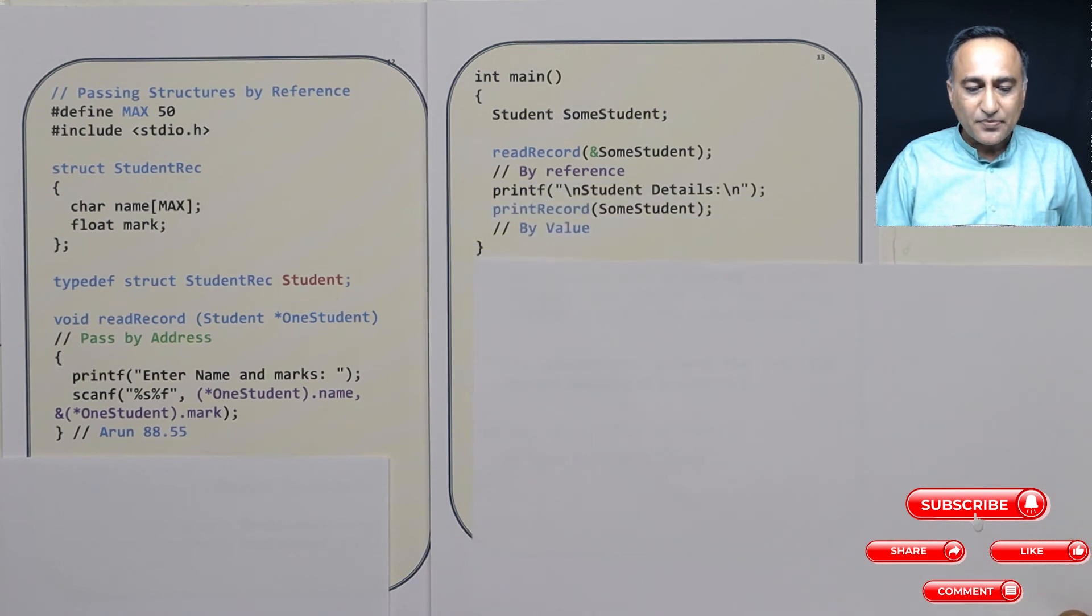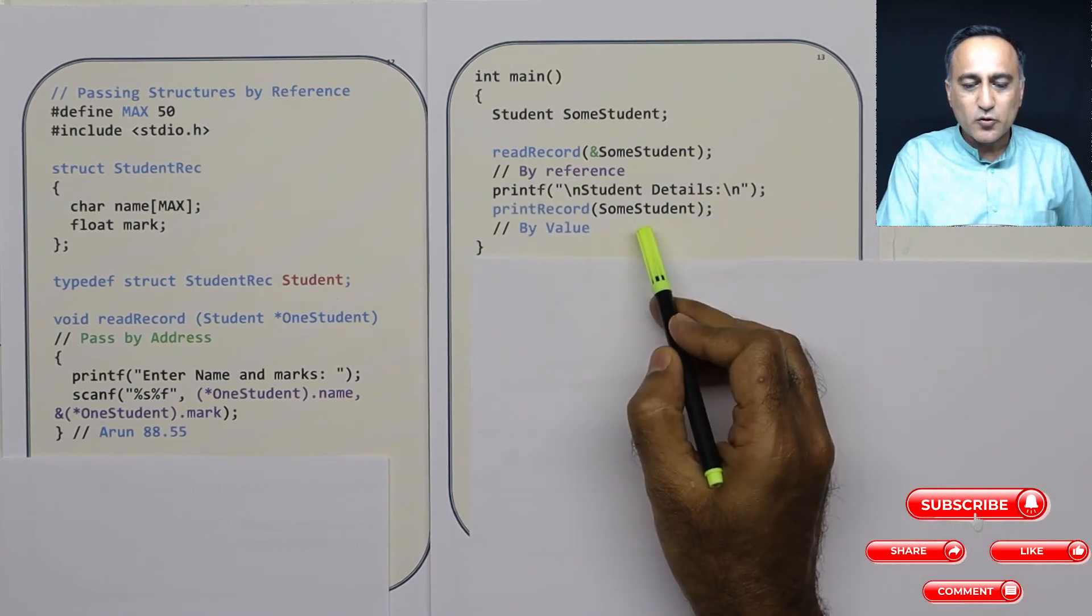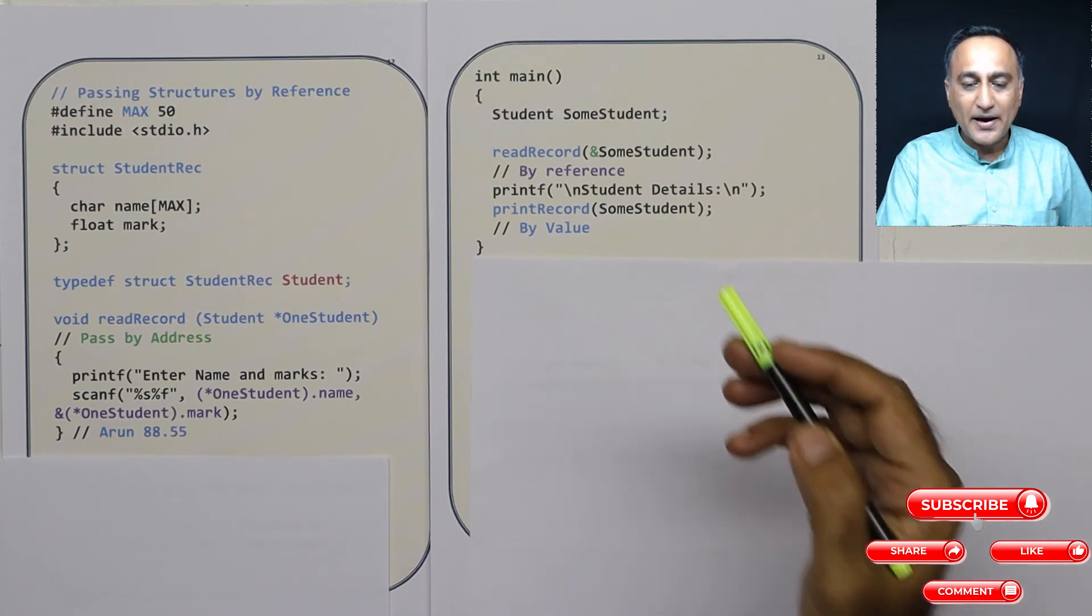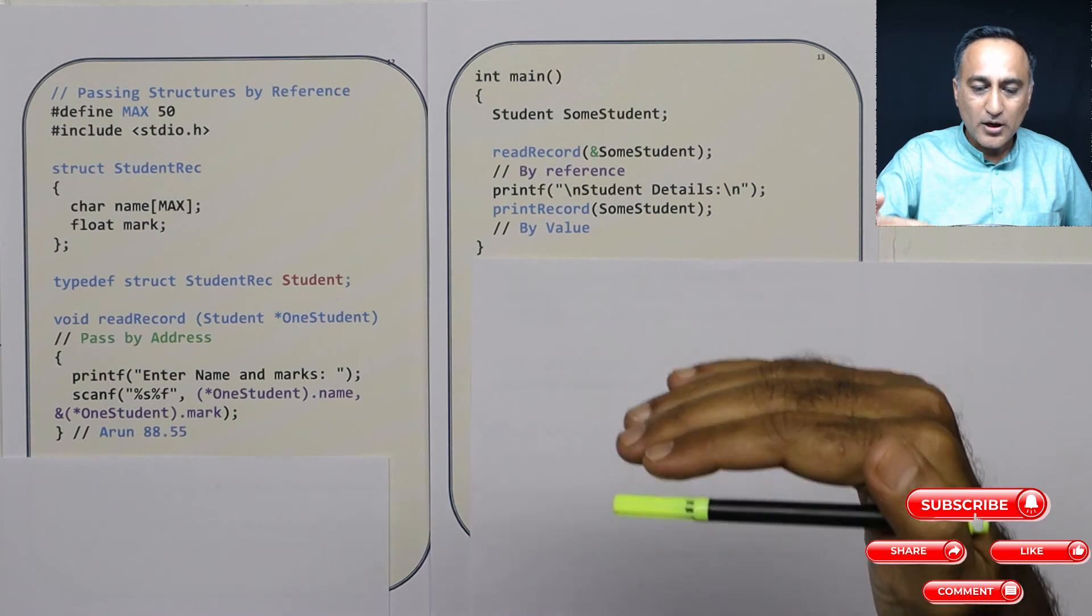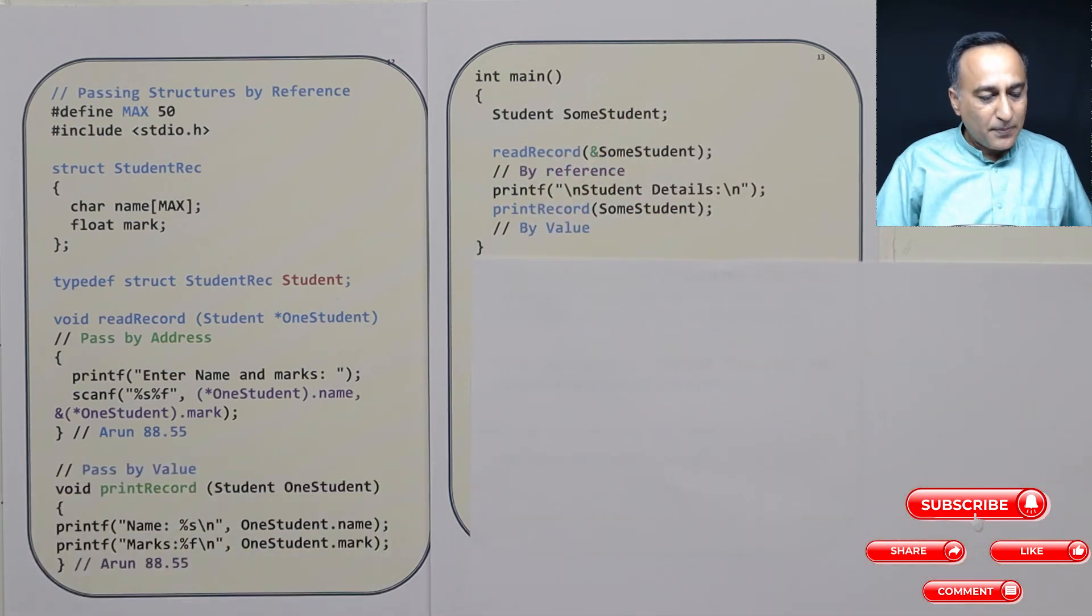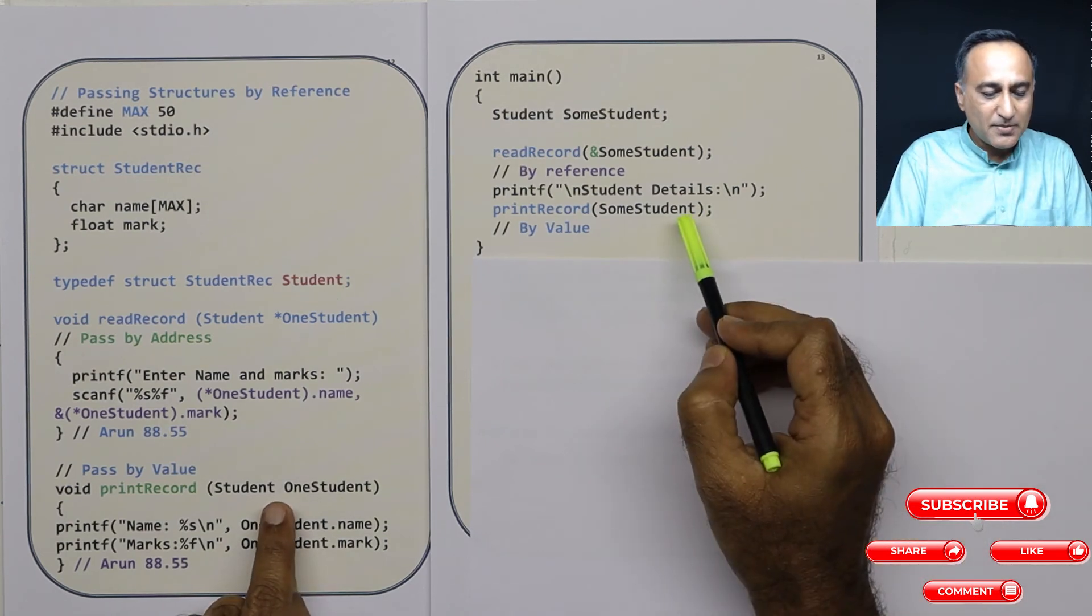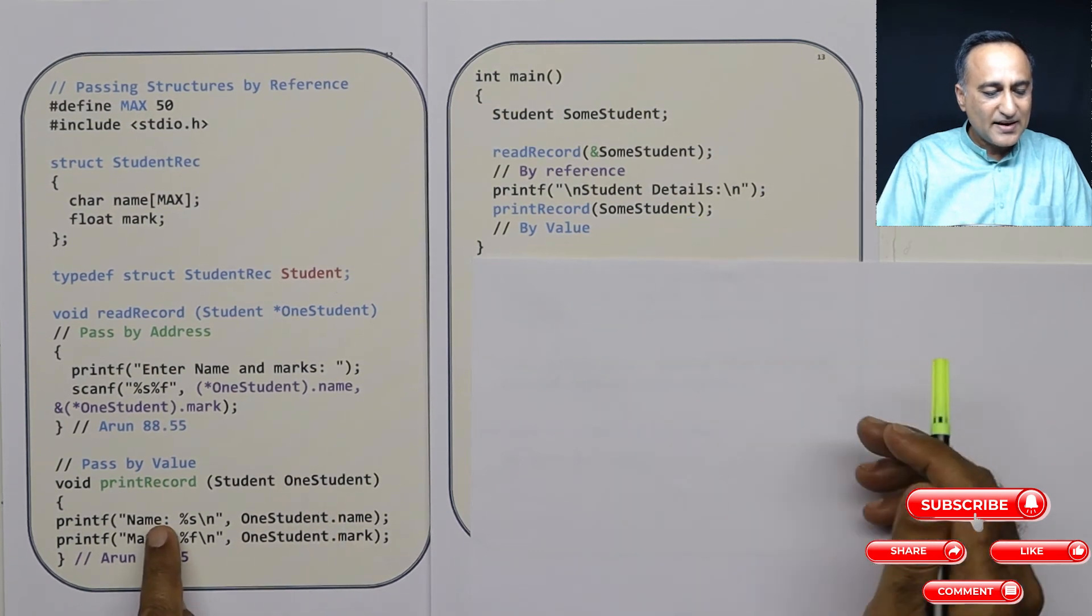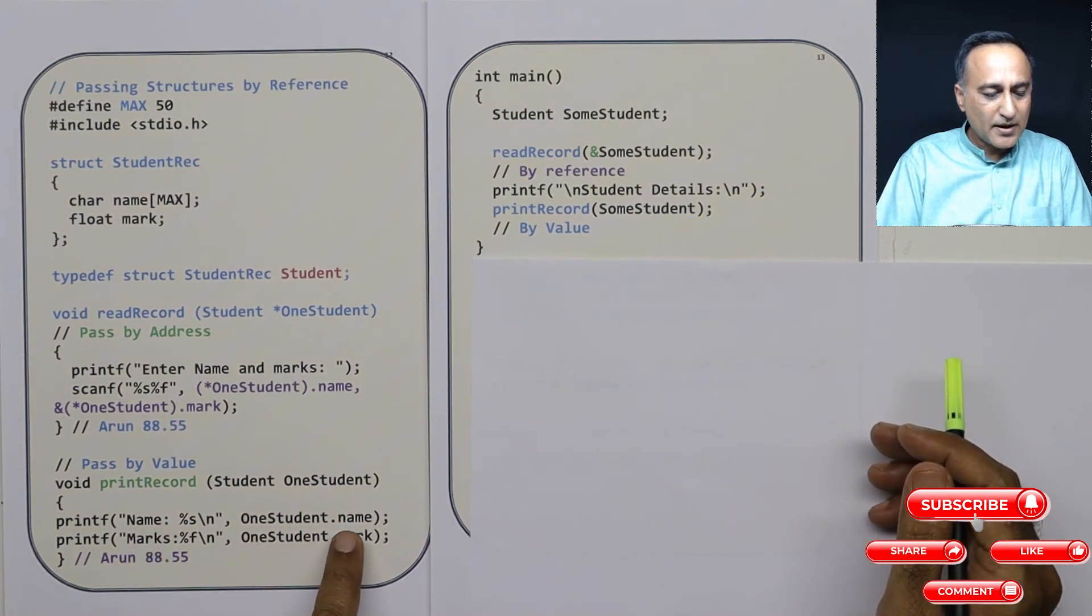So if I have to print the record, now I am showing you I am not passing the address. I am simply sending some student by value because I wanted to show you pass by reference as well as pass by value. In pass by value, there is no star because I am passing by value, student one student. Then name is one student dot name, marks are one student dot mark.